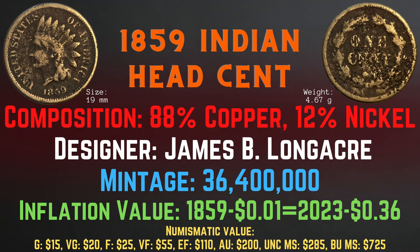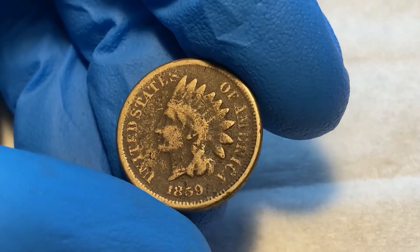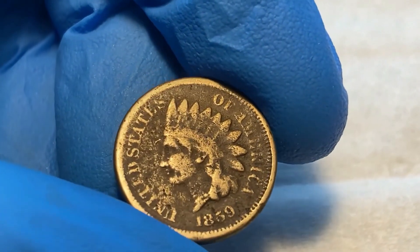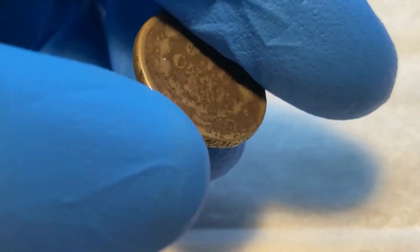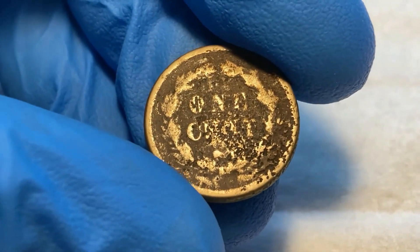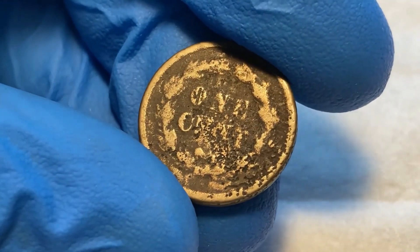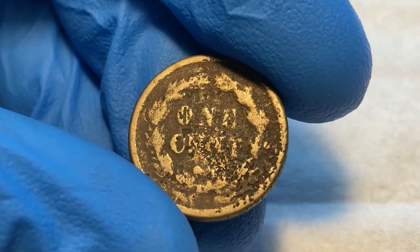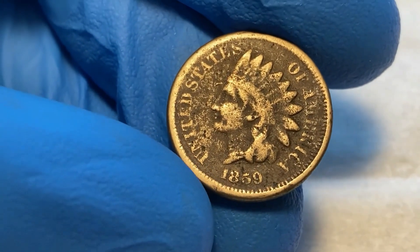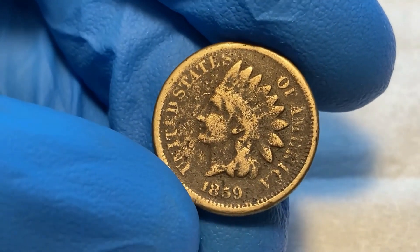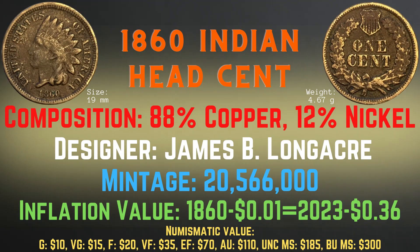Now we will take a closer look at the 1859 Indian Head cent from my collection. The details are still there, however it is fairly worn on both the front and the back — the "one cent" is barely visible but it is there. Being made of copper, it does wear down pretty easily as copper is soft. If I were to grade this coin, I would grade it as fine condition.